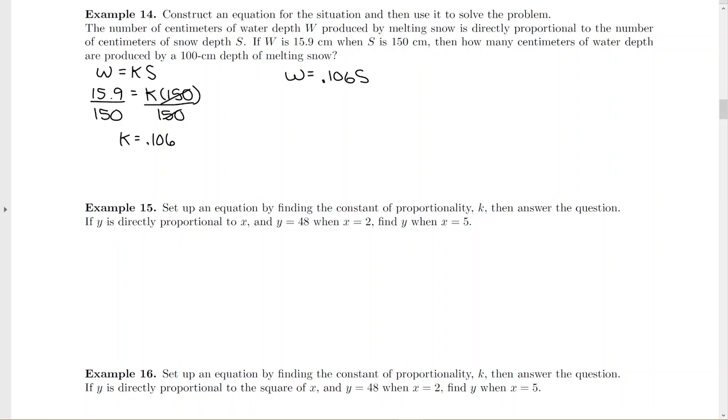So then we go through and find how many centimeters of water are produced with 100 centimeters of melting snow. So we're looking for W. And you're plugging in the 100 for S now. So this comes up 10.6. And then the unit label on it for our snow, rather our water depth, was centimeters. So that's going to be our final answer. Make sure you put the unit label on there.